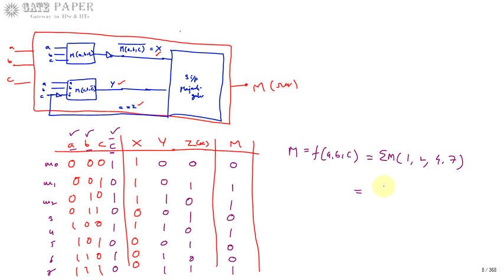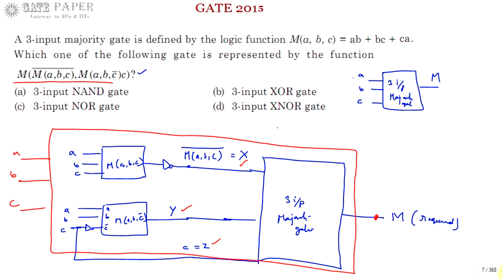Minimizing Σm(1,2,4,7) using a K-map gives a XOR b XOR c, which is a 3-input XOR gate. So the circuit represented by m of m(a,b,c)', m(a,b,c̄), c acts as a 3-input XOR gate. The correct answer is option B.